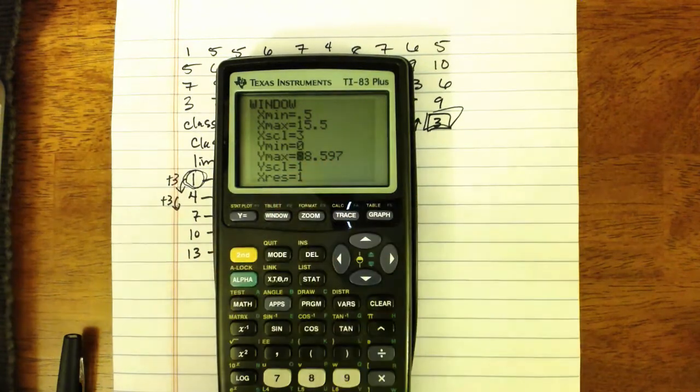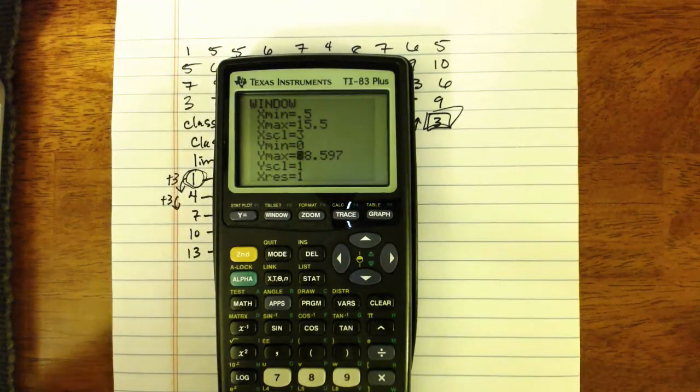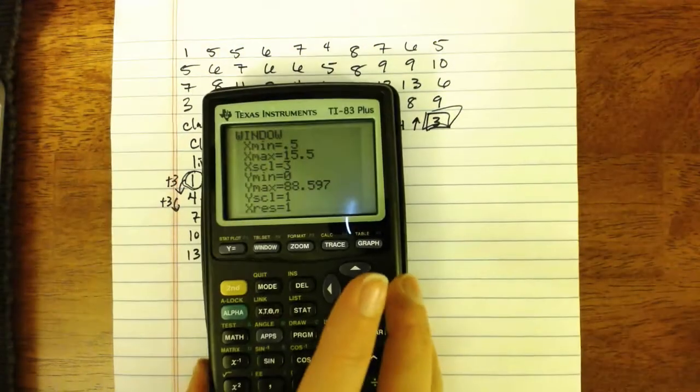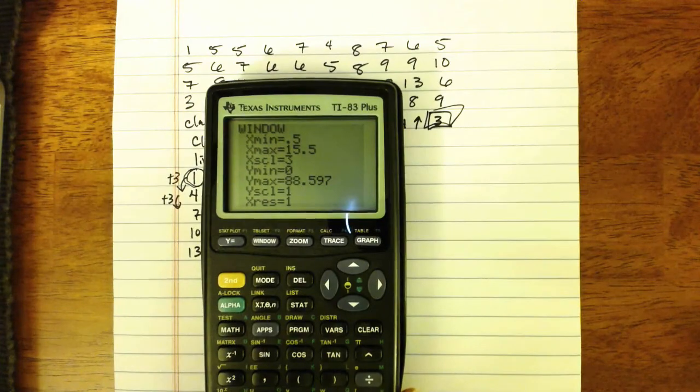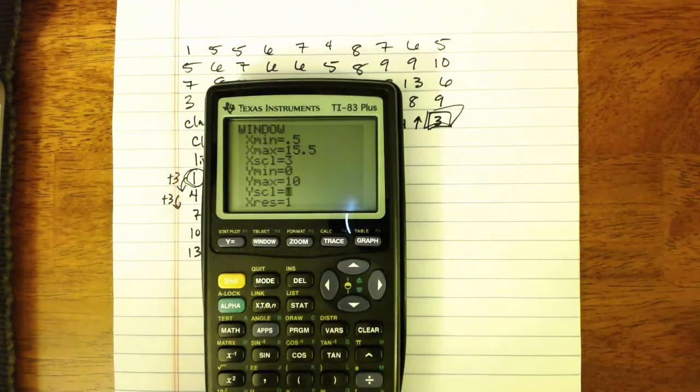Your Y min should be set to 0. And then your Y max should be set to a little higher than whatever your highest frequency was from your frequency table. Since I didn't actually make the entire frequency table here, I don't know what my highest frequency was. I'm just going to use 10 as a guess. If that's not high enough, we'll come back and adjust it.